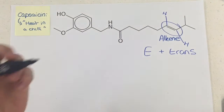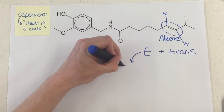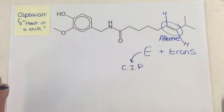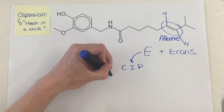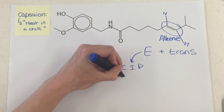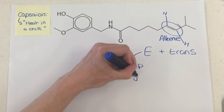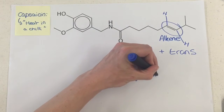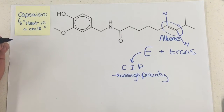The E is because of the Cahn-Ingold-Prelog rules, which denote priority — or we can say they assign priority — to groups around the carbon-carbon double bond.